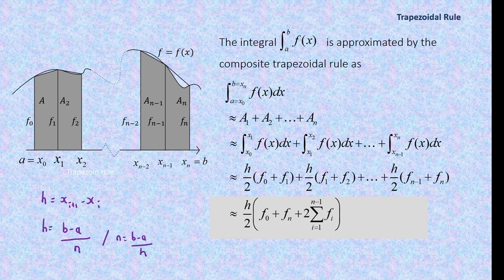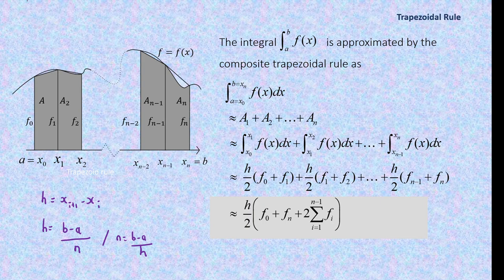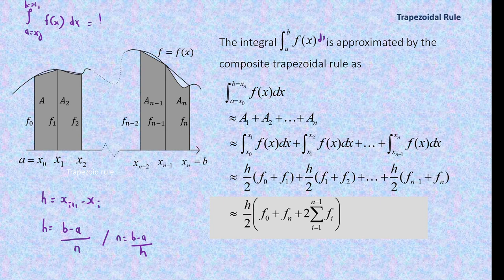For numerical integration, from the problem you know a and b, and they must give you either n (number of segments) or h (step size), then you calculate the other. The formula using one segment is h/2 × [f(x₀) + f(x₁)]. Because one segment introduces big error, we increase the number of segments to reduce the error.